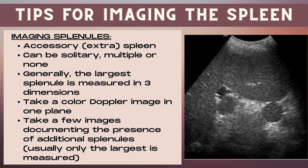Now let's talk about splenules. A splenule is an accessory or extra spleen. A patient can have no splenules, one splenule, or multiple splenules. When visualized, generally the largest splenule is measured in three dimensions, and depending on your site's protocol, you may also take a color Doppler image of the splenule to ensure there's no torsion. Though you're not measuring every single splenule, it's still important to take a few images while sweeping to document the presence of any additional splenules. In practice, only the largest splenule is typically measured.